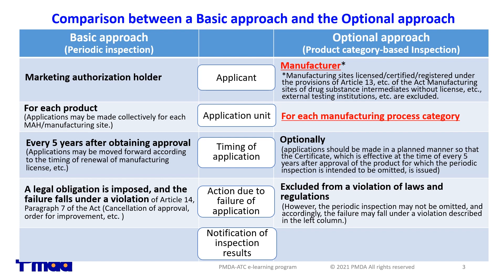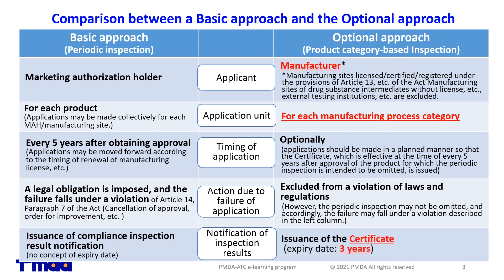Specifically, GMP and GCTP inspections are conducted for each category of manufacturing process, classified with consideration for factors such as the technical characteristics of the process. A GMP certificate for product category-based inspection — hereafter, the certificate — is issued to the manufacturer for each category of manufacturing process, effective for three years. During the effective period of the certificate, the periodic inspection for each product based on the application from the MAHs may be omitted for products belonging to the applicable category.